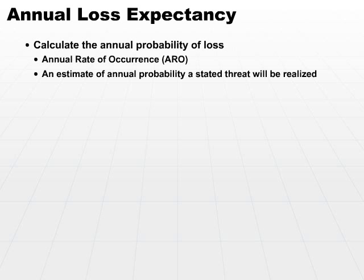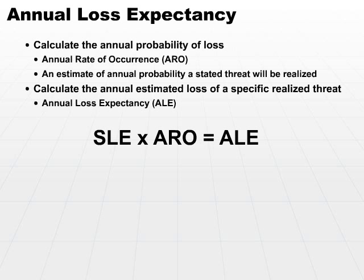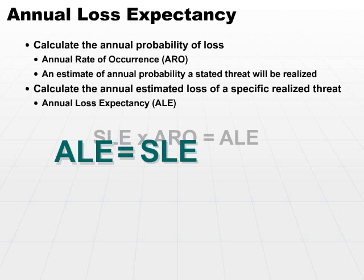Once you know the annual rate of occurrence, the way you calculate the estimated loss of a specific realized threat is to simply multiply the single loss expectancy times the annual rate of occurrence — and that becomes the annual loss expectancy, or ALE. So the annual loss expectancy — how much you're expected to lose if this threat is realized every single year — equals the amount you're going to lose for a single loss occurrence times the probability it's going to occur, or the number of times it'll occur in a year.